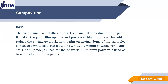Next is the composition of paint. Based on the requirement, the ingredients or composition of paint may vary, but some basic ingredients are as follows. The first is the base. The base, usually a metallic oxide, is the principal constituent of the paint. It makes the paint film opaque and possesses binding properties which reduce the shrinkage cracks in the film on drying. Examples of base include white lead, red lead, zinc white, aluminum powder, iron oxide etc. Aluminum powder is used as a base for all aluminum paints, just to coat aluminum surfaces.